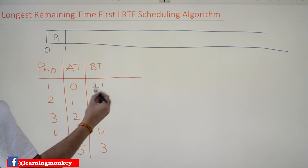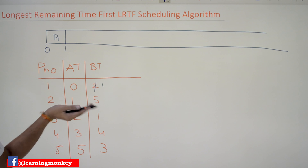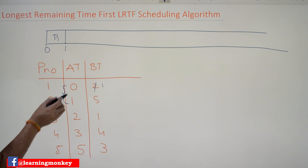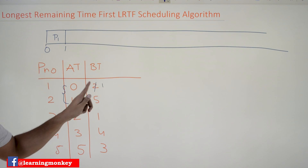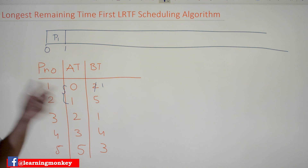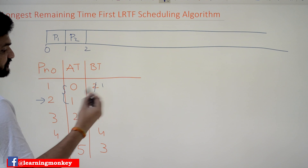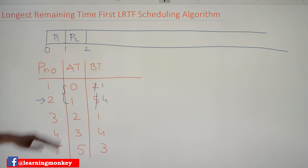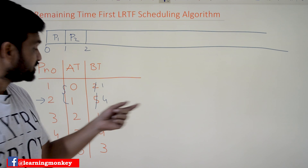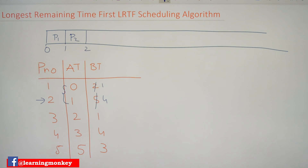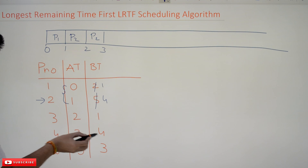After one unit of time, P1's burst time has been decreased by one. By time 1, processes P1 and P2 have arrived. Among these two we must choose which one to pick — in LRTF we pick the one with the longest remaining time. P2 has the longest remaining time, so P2 is selected and executes for one quantum, reducing its remaining time to 4. By time 2, a third process has arrived, and again P2 has the longest remaining time, so P2 is chosen again, reducing it to 3.